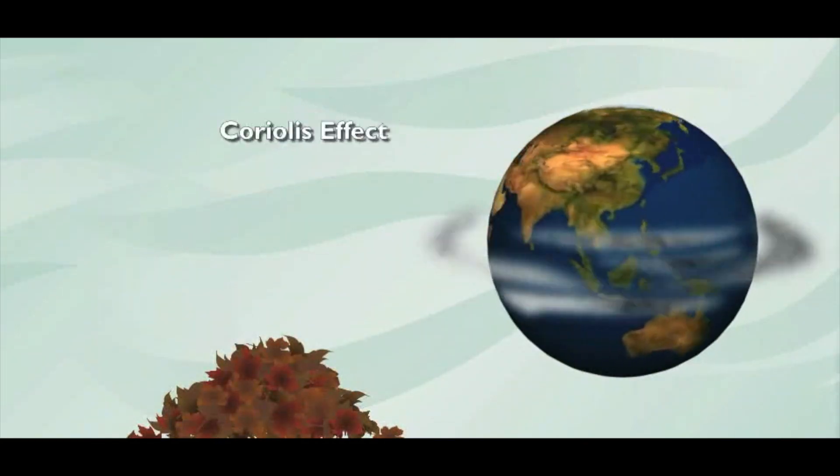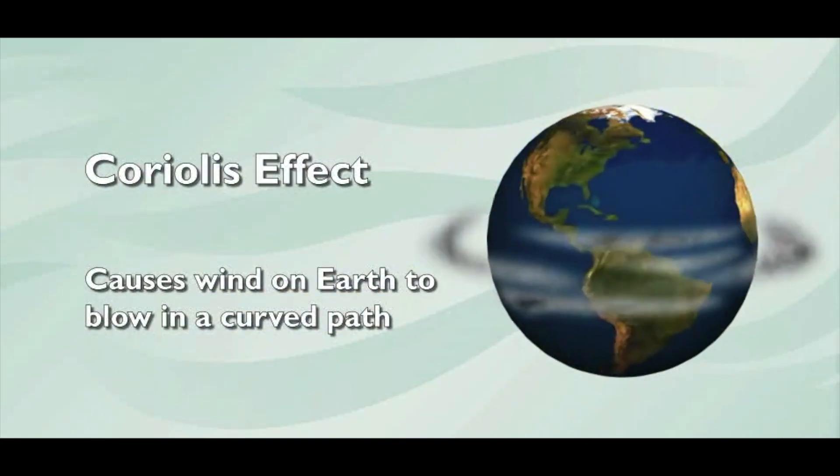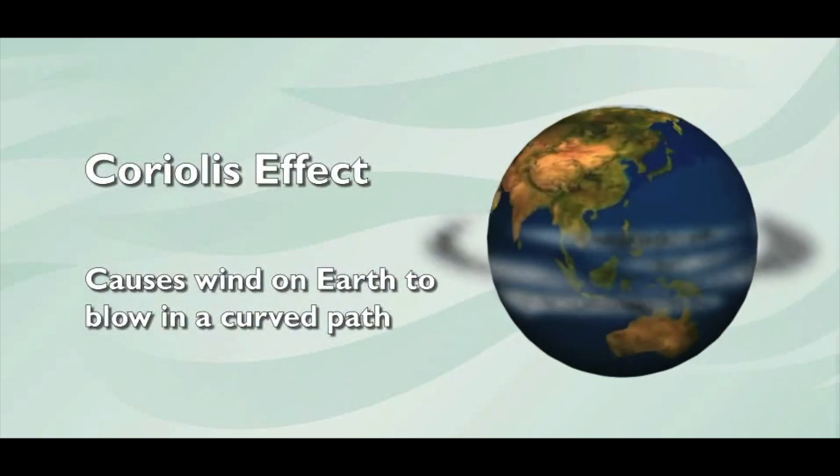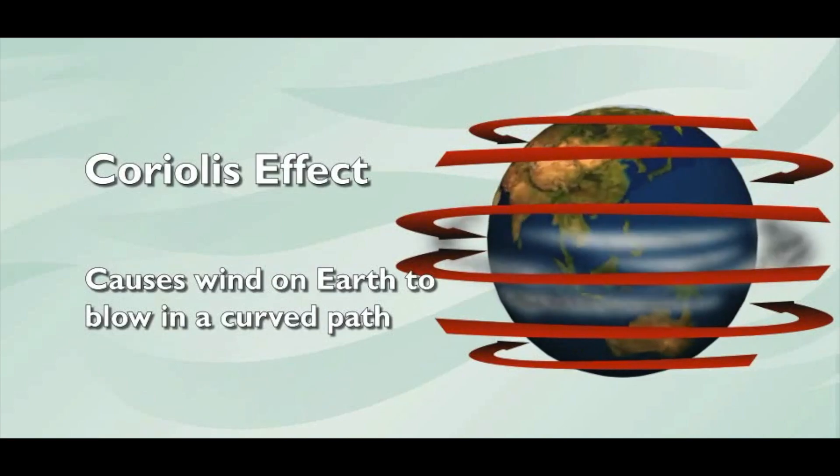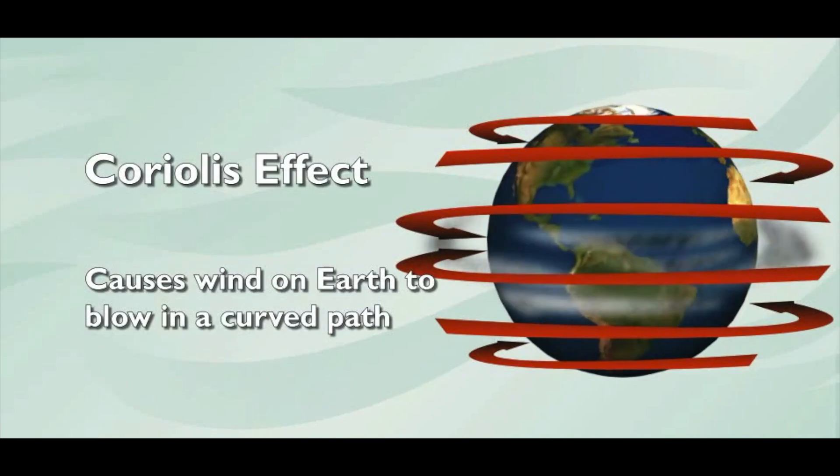All this air movement is affected by one more thing. Lay it on me. The Earth's rotation. As the Earth spins, it pulls the wind and makes it travel on a slightly curved path, from west to east, or east to west. It's called the Coriolis effect.